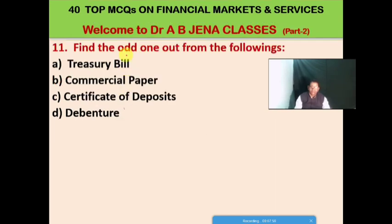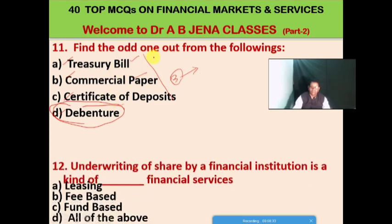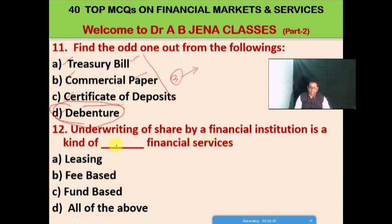Next MCQ: find the odd one out from the following — A: treasury bill, B: commercial paper, C: certificate of deposit, D: debenture. Treasury bill, commercial paper, and certificate of deposit are money market instruments, so debenture (D) is the odd one out. Next MCQ: underwriting of shares by a financial institution is a kind of dash financial services. A: leasing, B: fee based, C: fund based, D: all the above. C is the right option — underwriting of shares by a financial institution is a kind of fund based financial services.